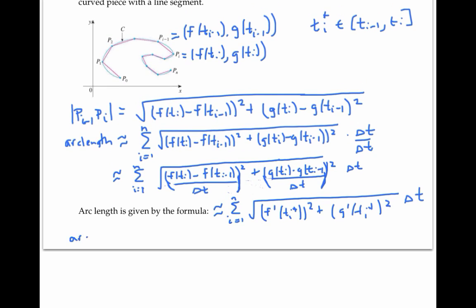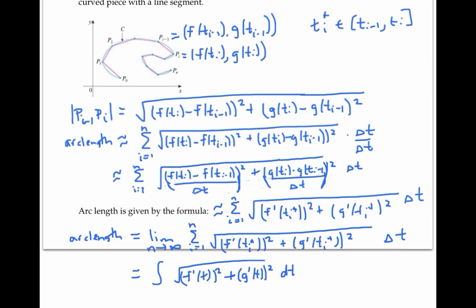Now exact arc length is going to be the limit of this expression, as the number of intervals goes to infinity. As usual, I can replace the limit of this Riemann sum with an integral, where the bounds of integration are the t values that get me from the start of the curve to the end of the curve.